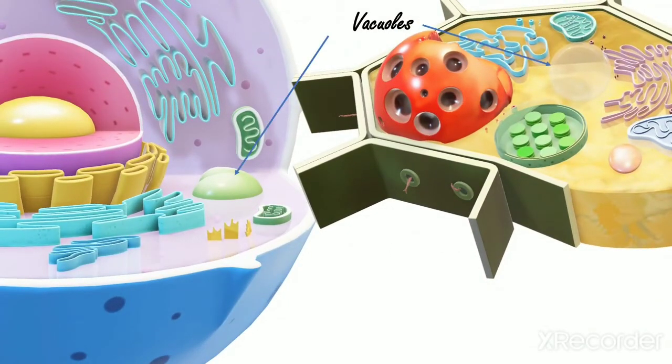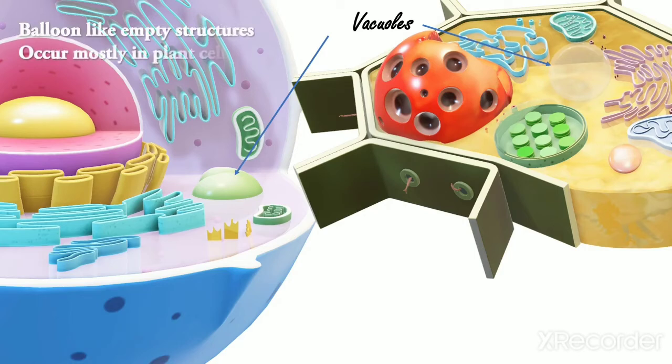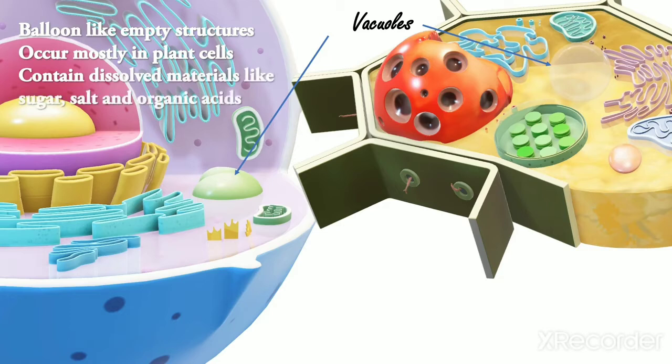Five, Vacuoles. These are balloon-like empty structures which are present mostly in plant cells. They contain dissolved material like sugar, salt, and organic acids. The fluid is called cell sap.